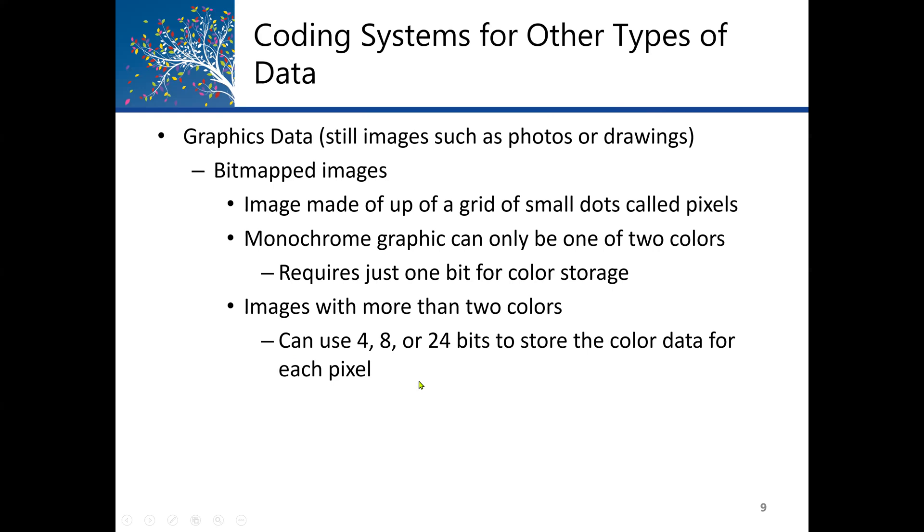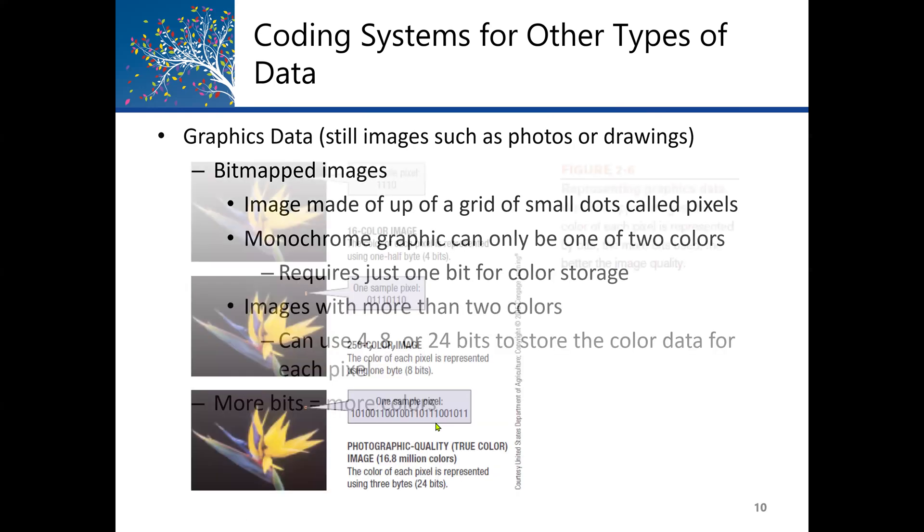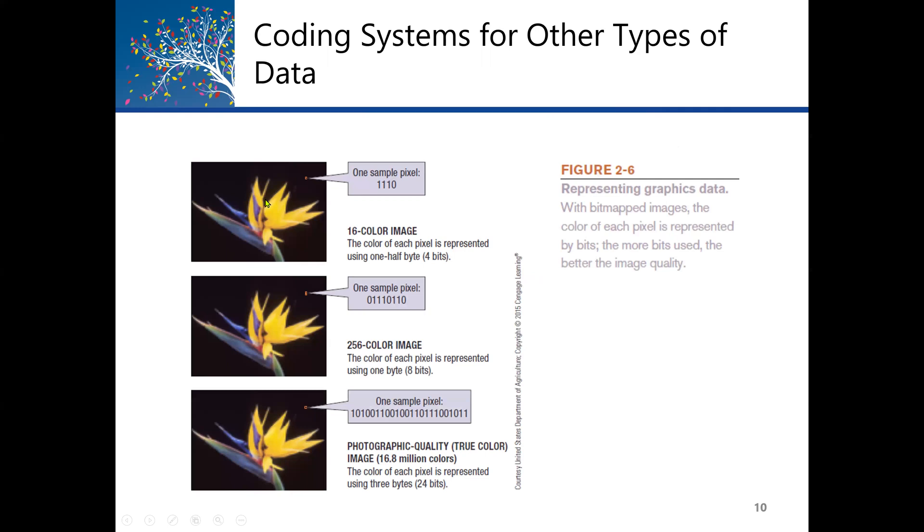Images with more than two colors can use four, eight, or 24 bits to store the color data for each pixel. The pixel represents a dot of an image, the smallest unit of an image. The more bits you have, the more colors we can have, and the image becomes very clear. This is an example here. In the first one, we have a sample, one sample pixel: 1, 1, 0, which is a 16-color image. The color of each pixel is represented using one half byte, which is four bits.